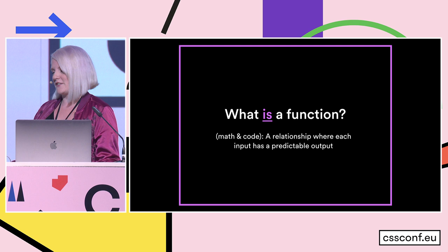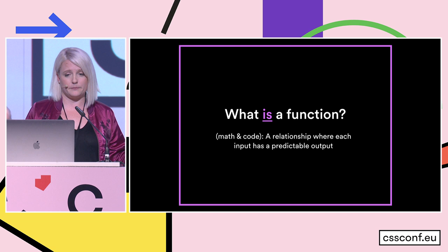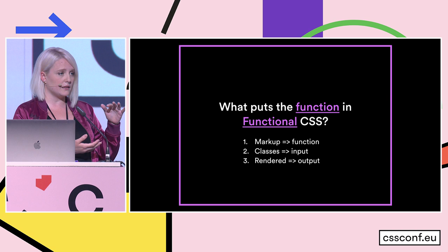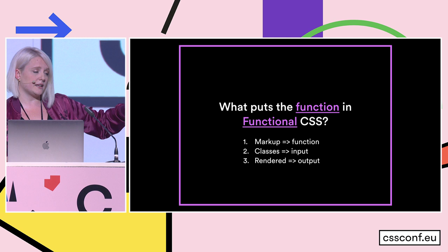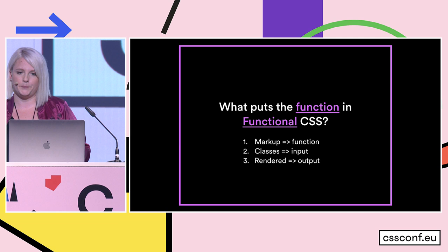And what's a function? We're all web developers here. With respect to math and code, it's essentially a situation where you have an input and an output, something happens in between, and you want to be able to predict your output based on your input. So what puts the function in functional CSS? Rather than the classes being functions, I like to think of the markup itself as being a function. You're inputting these classes, and you can predict what the rendered output is going to be.